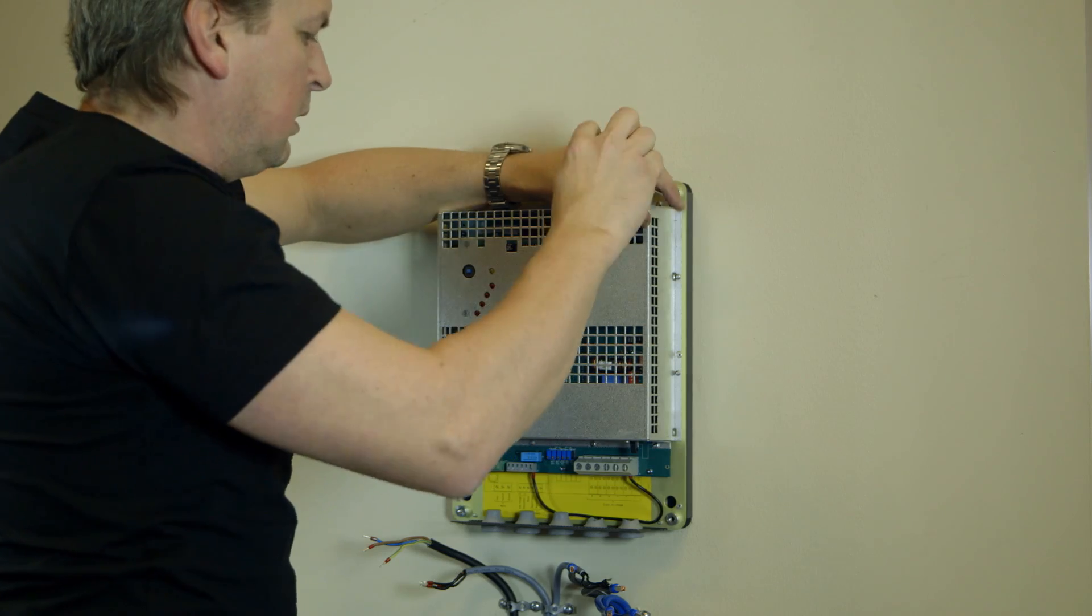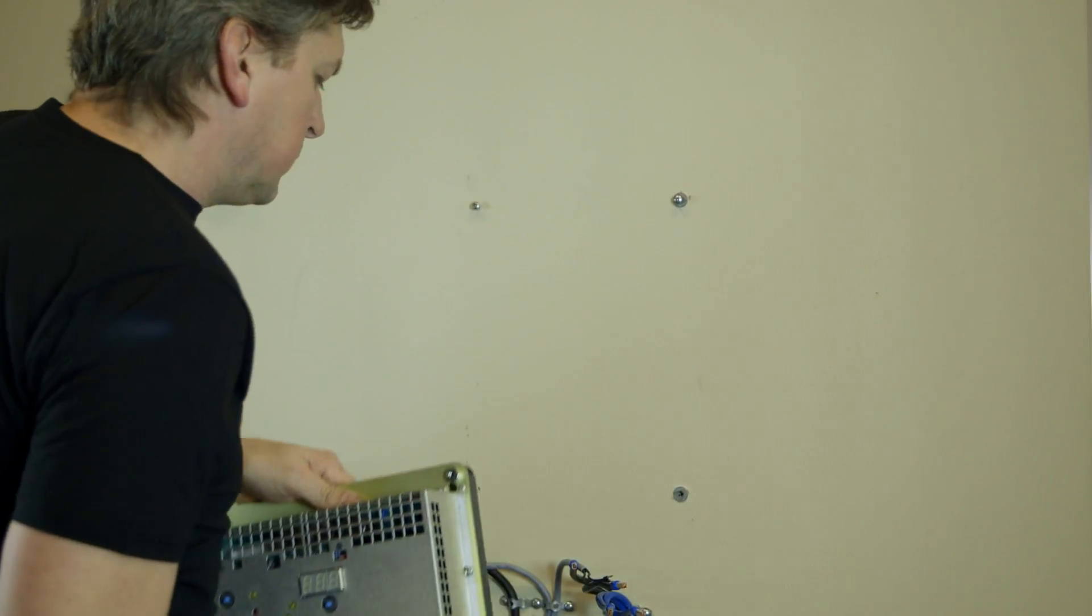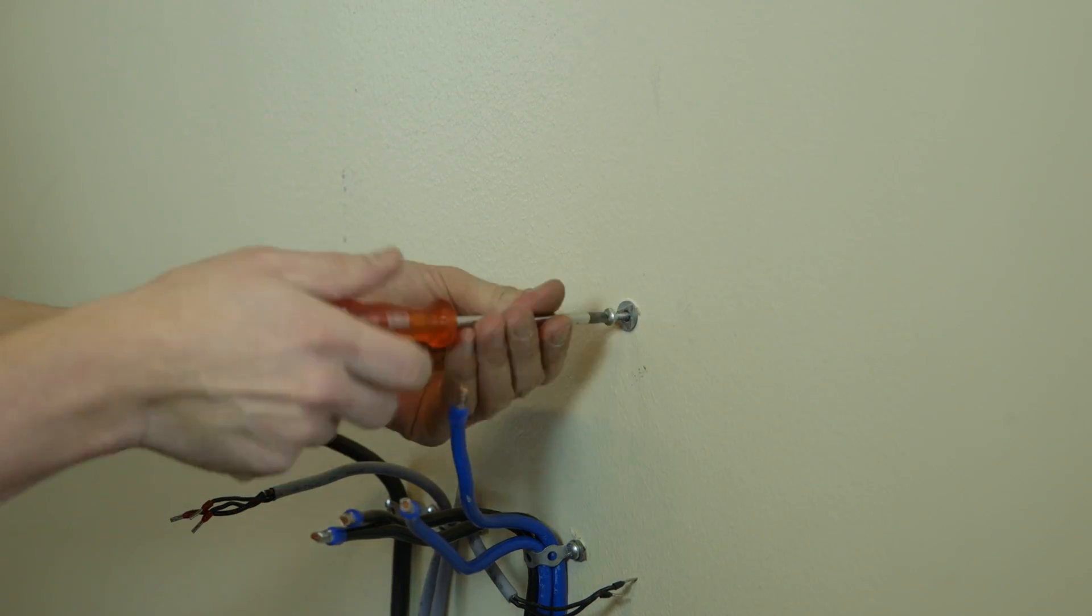Loosen screws and remove the system from the wall. You will use the same fixing holes for the Flatpak S Wallbox.